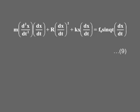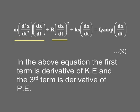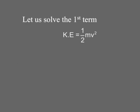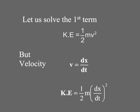To derive the energy equation of the driven oscillator, multiply equation 3 by dx/dt: m(d²x/dt²)(dx/dt) + R(dx/dt)² + kx(dx/dt) = F₀ sin(qt)(dx/dt). This is equation 9. In the above equation, the first term is the derivative of kinetic energy and the third term is the derivative of potential energy. Kinetic energy = ½mv² = ½m(dx/dt)².